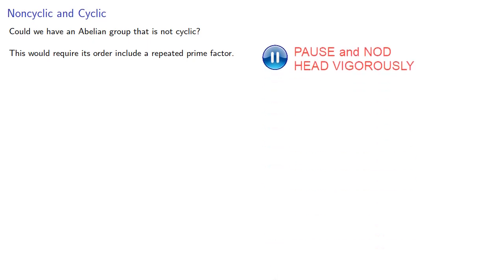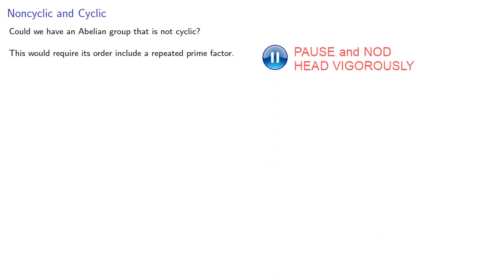And so we now know everything there is to know about all cyclic groups. So the question you've got to ask yourself is, could we have an abelian group that is not cyclic? This would require its order include a repeated prime factor. So let's consider the smallest possible group, groups G and H with four elements.